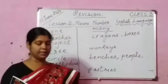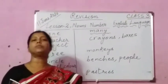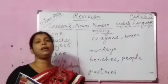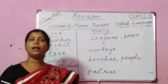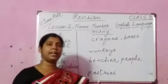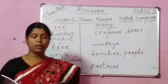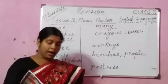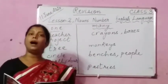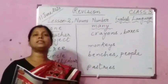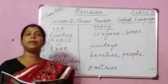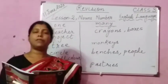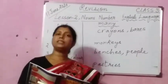Now we are going to revise Exercise B also: write these sentences using the plural forms of the nouns and make other necessary changes. Number 1: he is cutting a cake — they are cutting cakes. Number 2: the man is reading a story — the men are reading stories. Number 3: the child is eating a sandwich — the children are eating sandwiches. Number 4: the house is beside Nehru Park — the houses are beside Nehru Park. Number 5: the boy is climbing the tree — the boys are climbing trees. Number 6: the fox tried to reach the vines — the foxes tried to reach the vines.